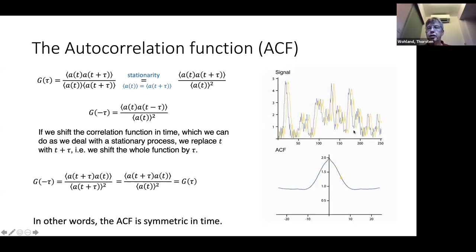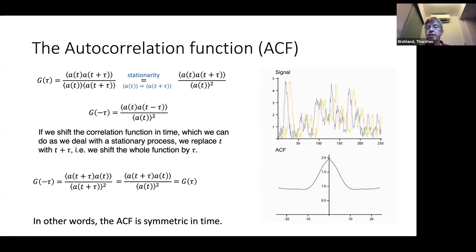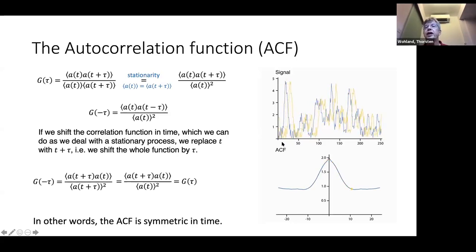Here's an example of the correlation function. I have a signal in blue and the yellow signal is exactly the same signal shifted in time by tau. I continuously shift it — the yellow signal can be before or after the blue signal. At the bottom you see the correlation function. It is maximum when the yellow and blue functions just overlap, i.e., when tau equals zero, and decreases as the shift increases because the peaks overlap less. The correlation function tells you how long a signal persists.